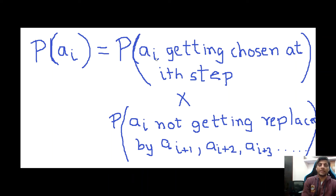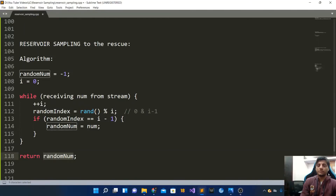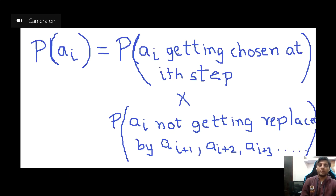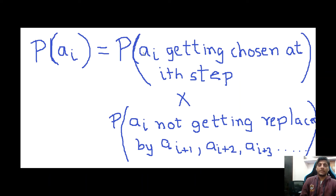The probability of a_i getting returned as the random number equals the probability of a_i getting chosen at step i, multiplied by the probability of a_i not getting replaced by any of the numbers that come after it — that is a_{i+1}, a_{i+2}, a_{i+3}, and so on. This can be written as: P(a_i chosen at step i) × P(a_{i+1} not chosen) × P(a_{i+2} not chosen) × ... × P(a_n not chosen).